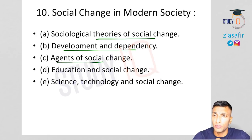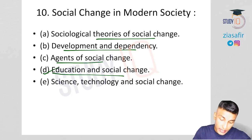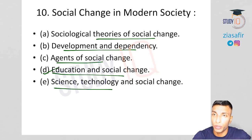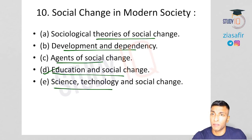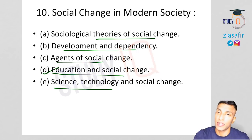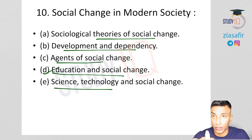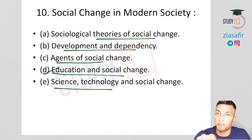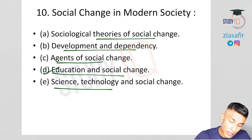Social change in modern society covers sociological theories of social change, development and dependency, and agents of social change. Education is one agent; science and technology is another — for example, washing machines and dishwashers freed up women's time for productive work. Law is also an agent of social change. The Constitution brought equality and drastically changed Indian society. Laws like the Domestic Violence Act, Widow Remarriage Act, and anti-Sati resolutions changed women's lives significantly.